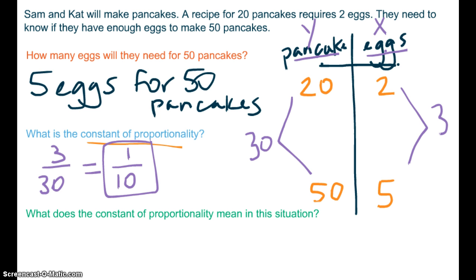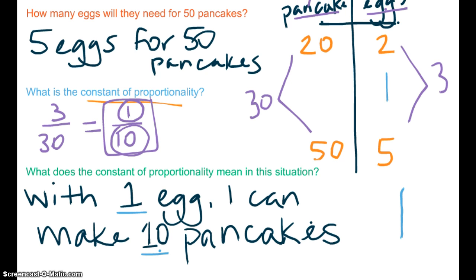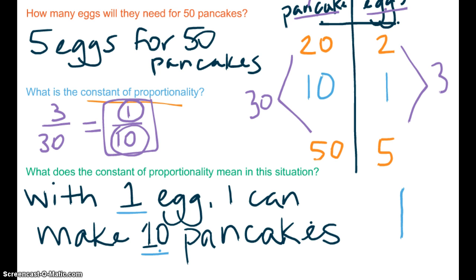What does that constant of proportionality mean? It means that I need, that for every egg that I have, I can make 10 pancakes. So again, with 1 egg, I can make 10 pancakes. In other words, your constant of proportionality is your unit rate.